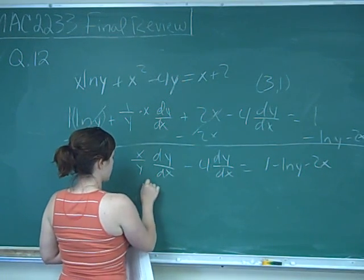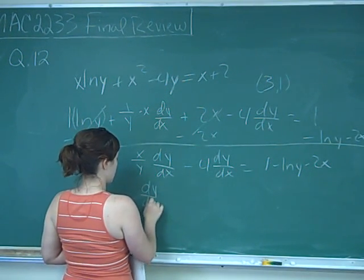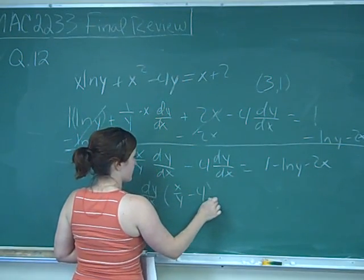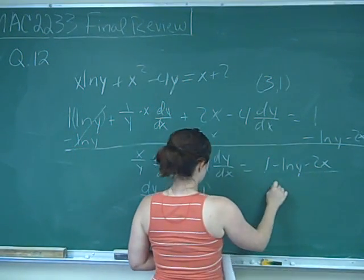So I'm going to factor out dy/dx, and I get x over y minus 4, and I'm just going to divide both sides by that.